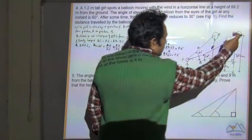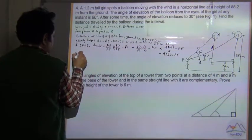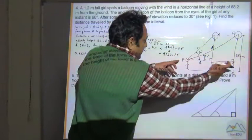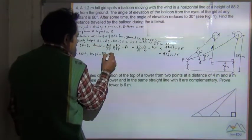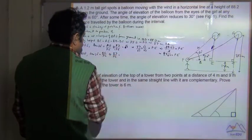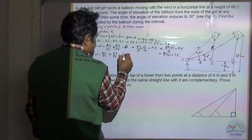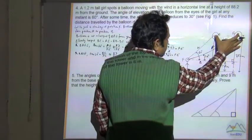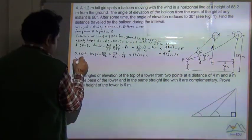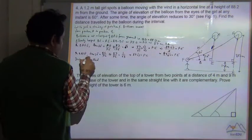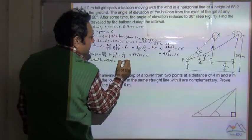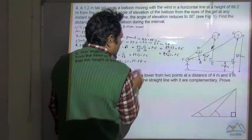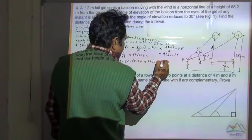Now consider triangle BCF. In triangle BCF, tan 30° = BC / FC. BC we know is 87, and tan 30° = 1/√3. So 87√3 = FC. The distance travelled by the balloon equals AD = EC, and EC = FC minus FE. So EC = 87√3 minus 29√3.